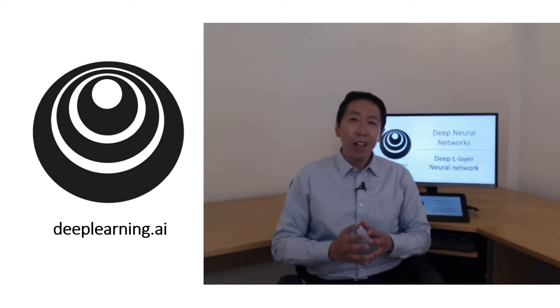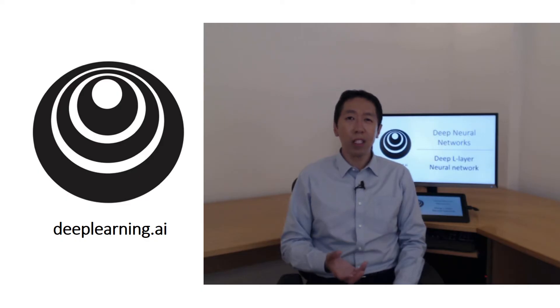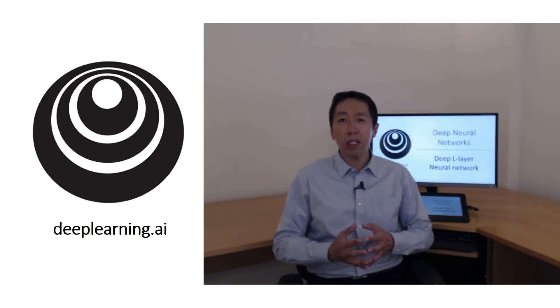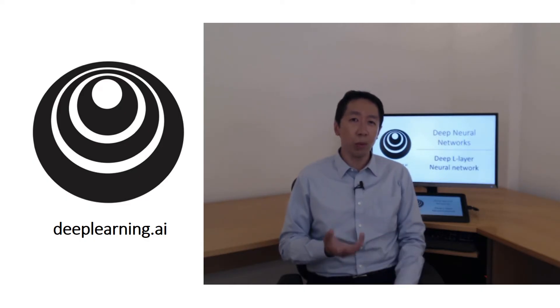Welcome to the fourth week of this class. By now, you've seen forward propagation and back propagation in the context of a neural network with a single hidden layer, as well as logistic regression. You've learned about vectorization, when it's important, and how to initialize the weights randomly. If you've done the past couple of weeks' homeworks, you've also implemented and seen some of these ideas work for yourself.